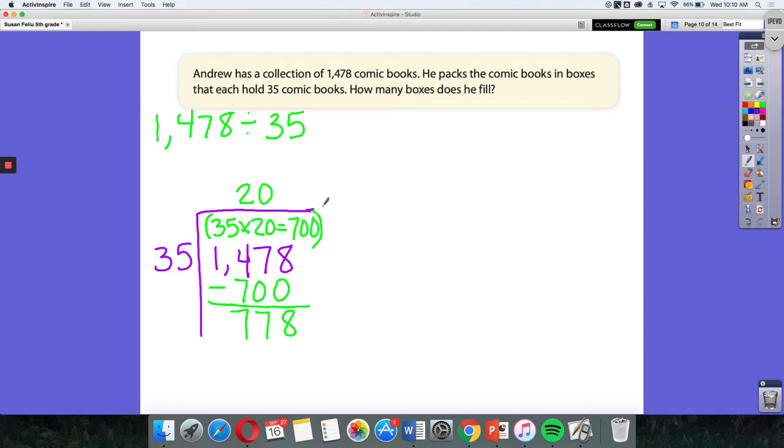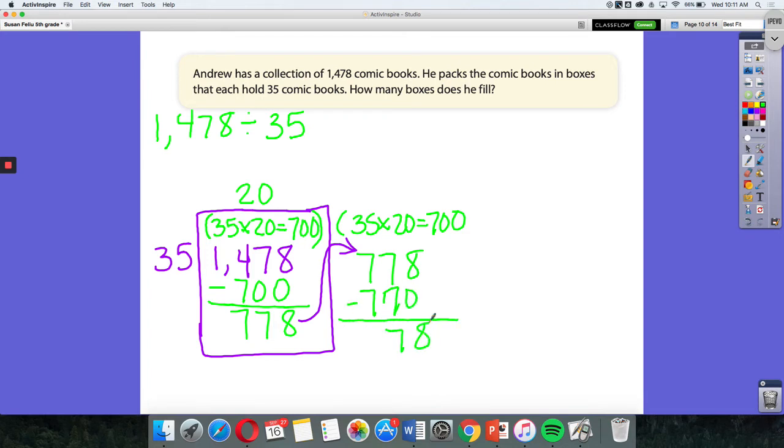So I'm going to take this 778 and I'm going to, again, find how many groups of 35 will go in there. And again, I can use whatever I'm comfortable with. I don't know my 35 facts, but I am comfortable with 35 times 20. And so I think I'm just going to use that again. So let's see, 35 times 20 gives me that 700, and of course I have 778, and I'm going to subtract it by 700, giving me 78. But before I'm going to move on, I'm going to write down my partial quotients I used for this one, which was, again, 20, something I'm comfortable with.